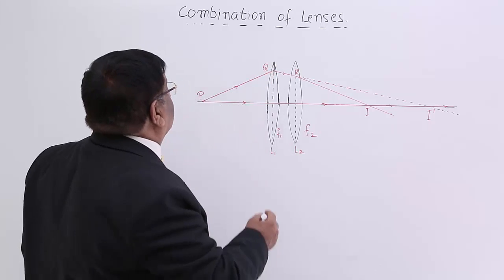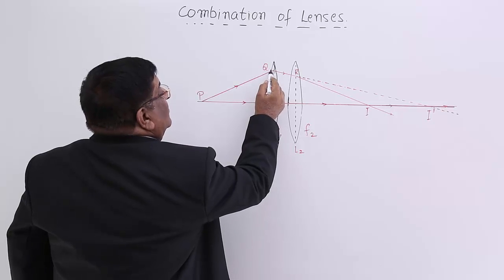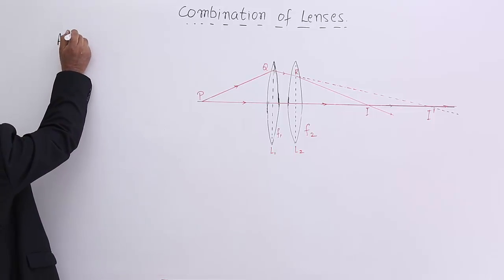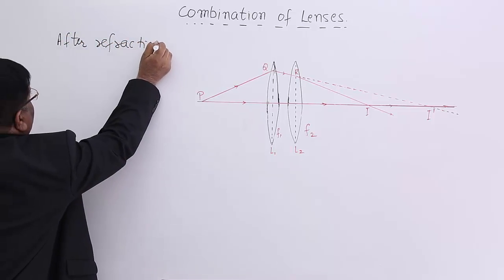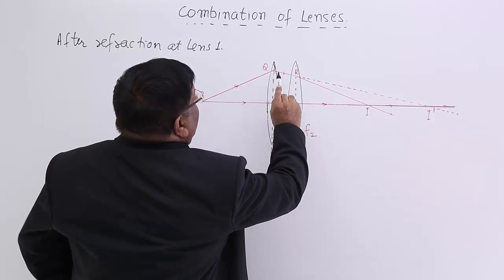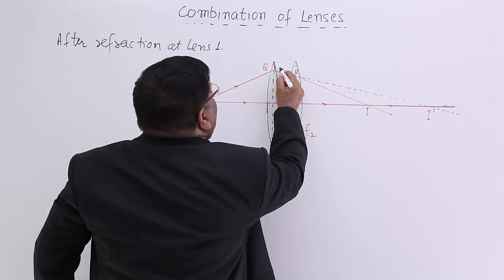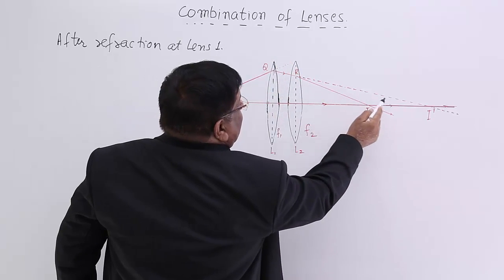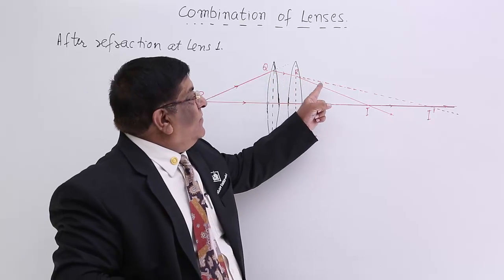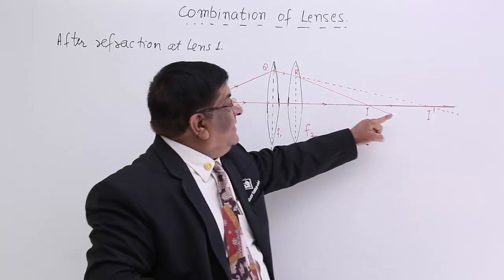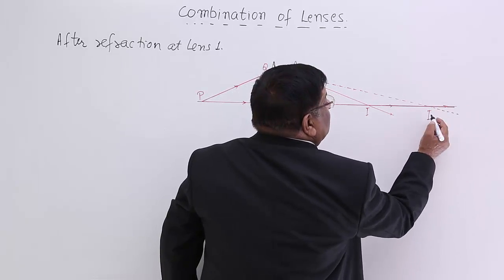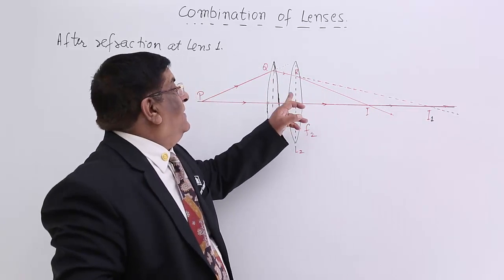The second ray lands at Q, where there will be refraction because of lens 1. After refraction at lens 1, the ray has been converged and bent. Had there not been lens 2, this ray would have gone and, along with the first ray, made an image — that is the image made by the first lens. Let's give it the name I1.